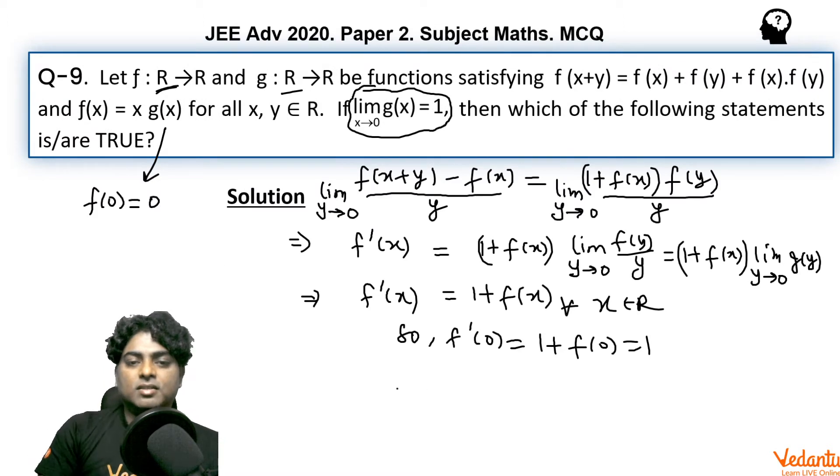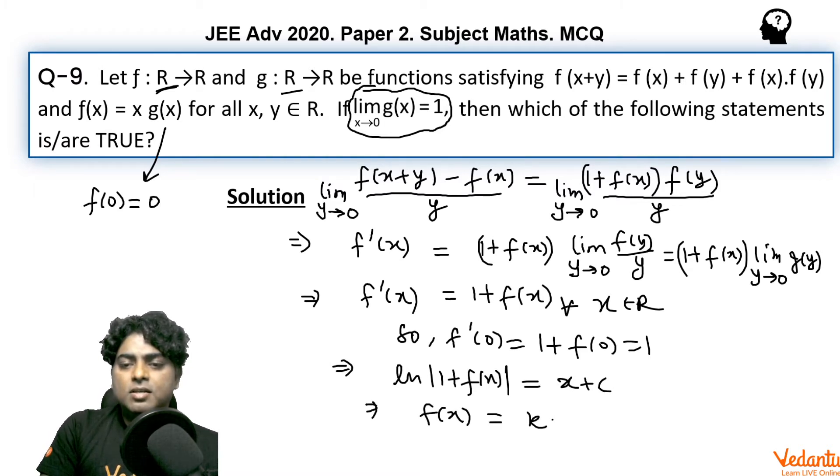Going for little integration over here, we can say if you take (1 + f(x)) in the denominator of left hand side and integrating it, you can easily get that ln(1 + f(x)) is equal to x + c and from here f(x) would be something k·e^x - 1.